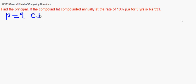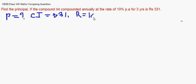The compound interest is given as rupees 331, compounded annually at the rate of 10% per annum for three years. So our interest is 331, rate is 10%, and time is 3 years. There are no complications since this is compounded annually.